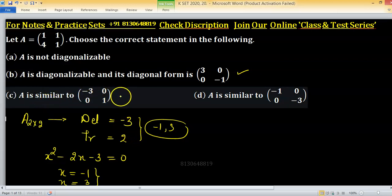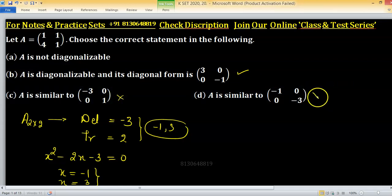In option C, trace is not 2, that's why discarded. And similar in option D.